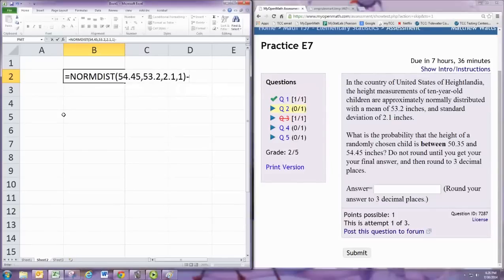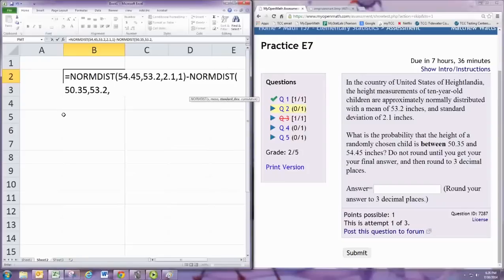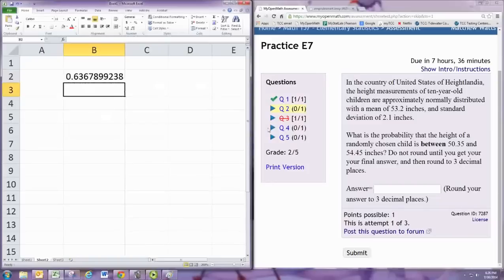That's your blue probability, and now we're going to subtract the red probability. We'll use 50.35. And that should give us the answer we're after. To three decimal places, we want .637.